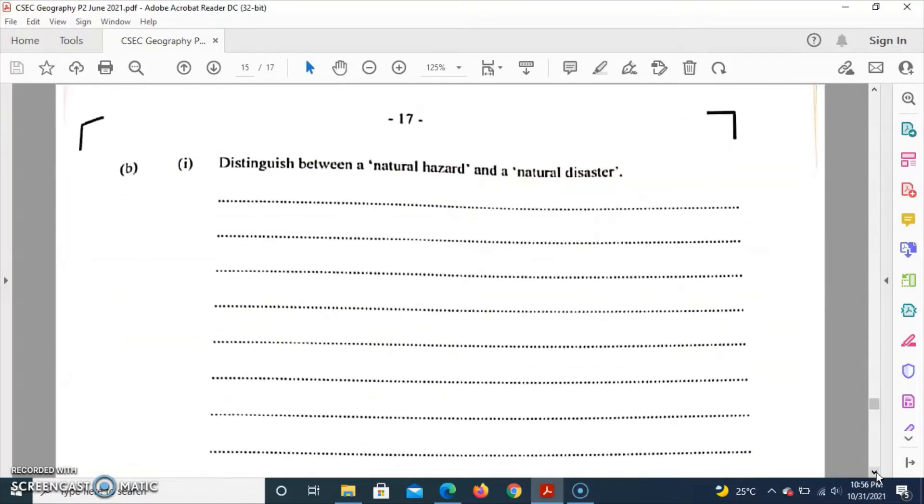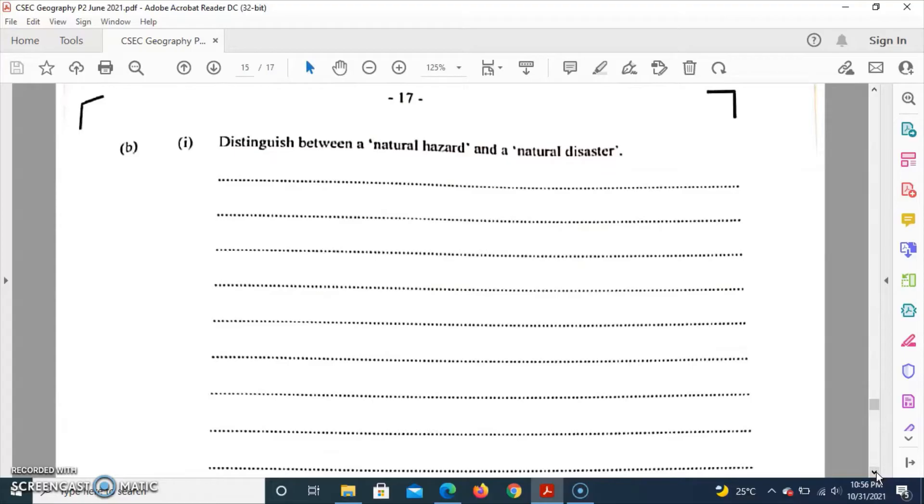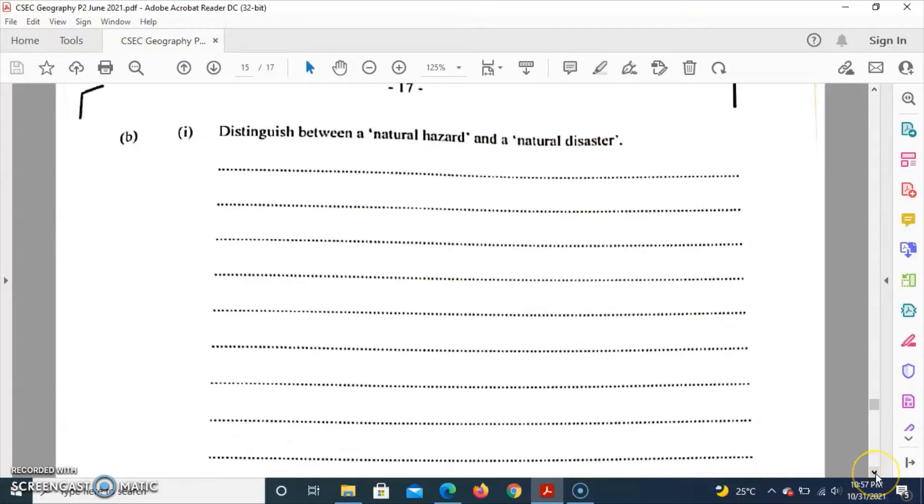Part B asks us to distinguish between natural hazard and natural disaster. Natural hazard is an extreme event that threatens human life and property, while a natural disaster is characterized as the effect of the hazard on human and property. So natural hazard has the potential to cause harm, and a natural hazard becomes a natural disaster when it has basically caused harm to both people and property.